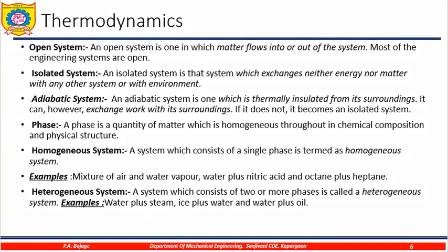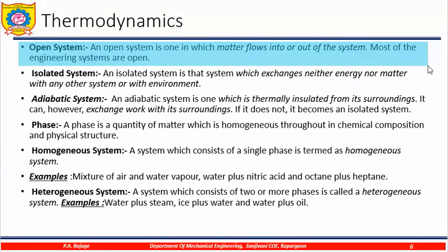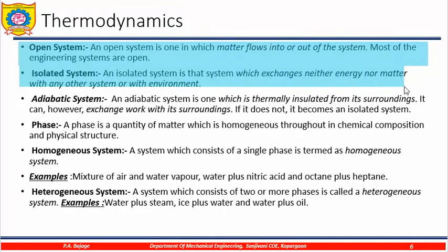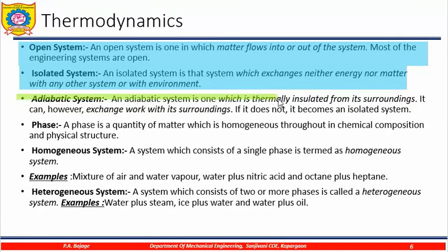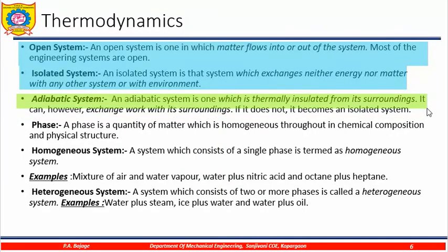What is an open system? An open system is one in which matter flows into or out of the system. Most engineering systems are open systems. An isolated system is one which exchanges neither energy nor matter with any other system or with the environment — there is no exchange of matter. An adiabatic system is one which is thermally insulated from its surroundings, meaning there is no transfer of heat. It can however exchange work, so work transfer is possible but heat transfer does not take place.